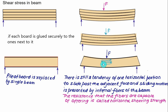There is still a tendency for one horizontal portion to slide past the adjacent layer, and this sliding motion is prevented by the internal fibers of the beam. The resistance that the fibers are capable of offering is called the horizontal shearing strength. If the applied load is large, the shearing stress exceeds the limiting value and the member will fail under shear.